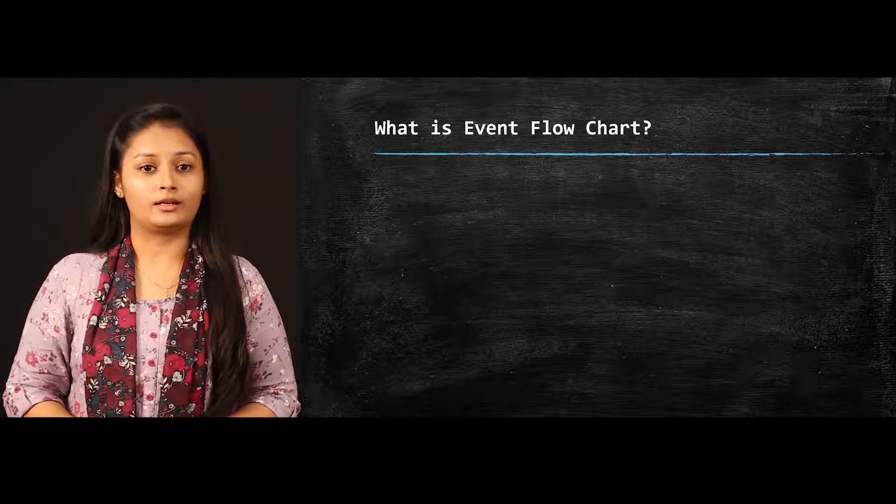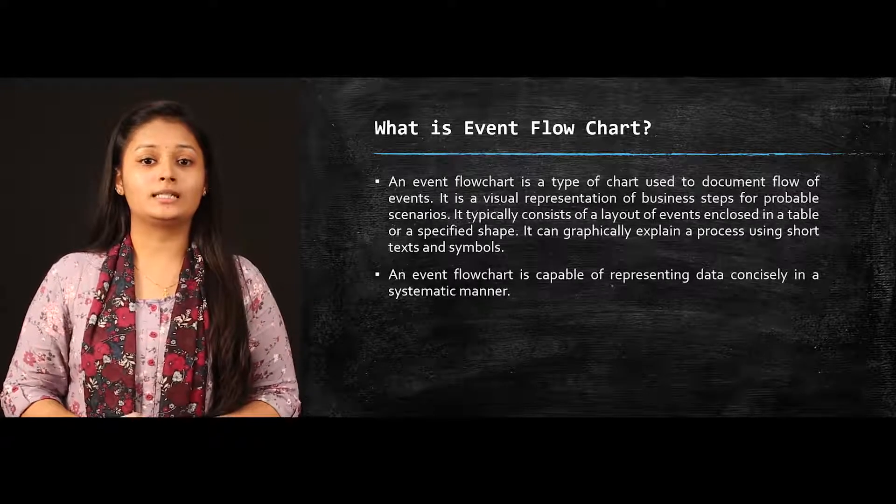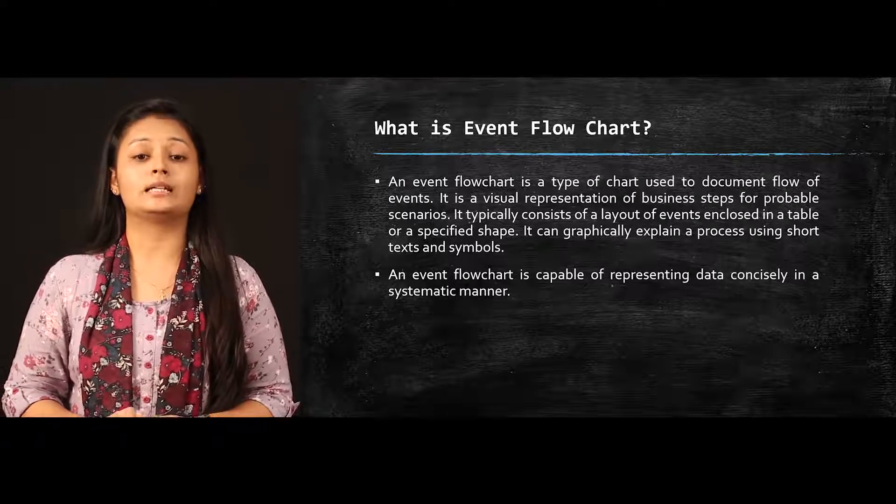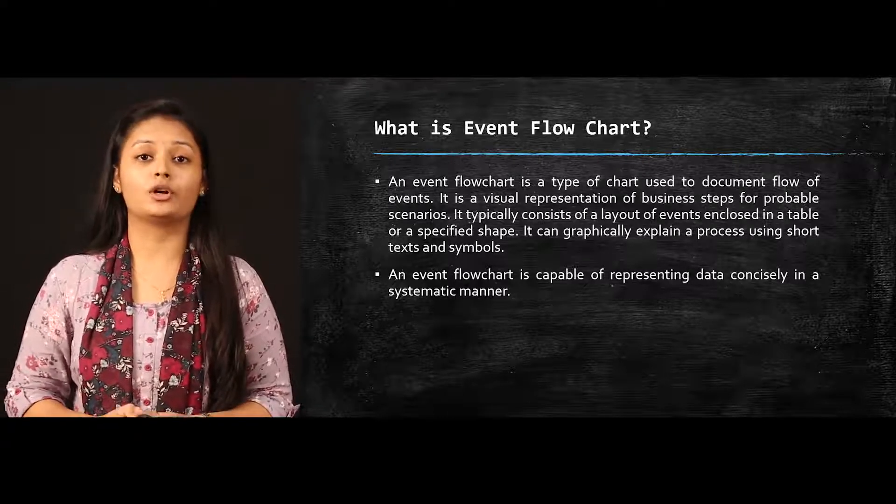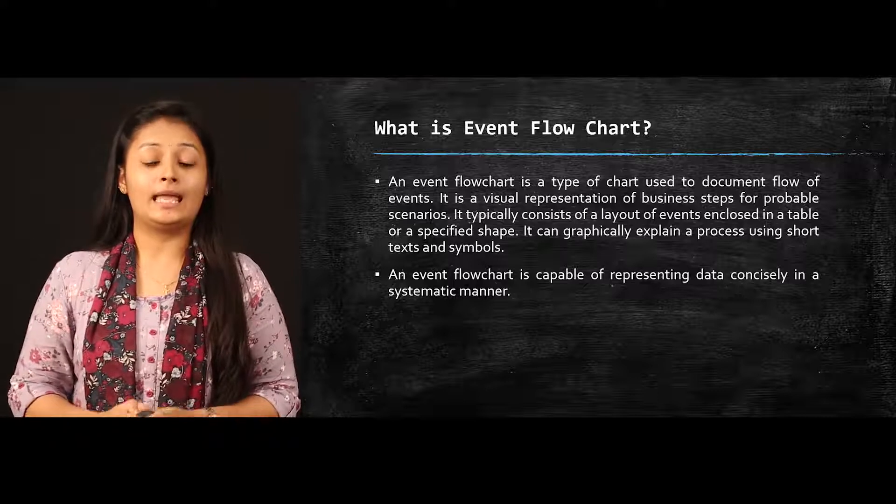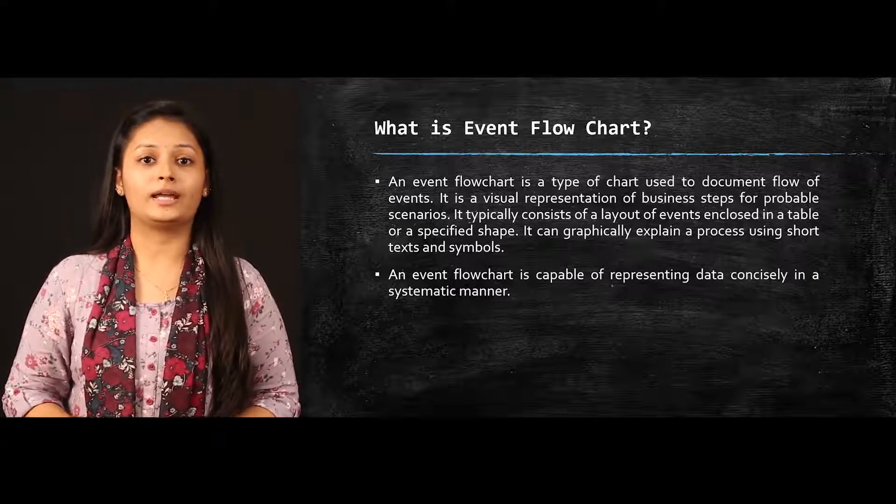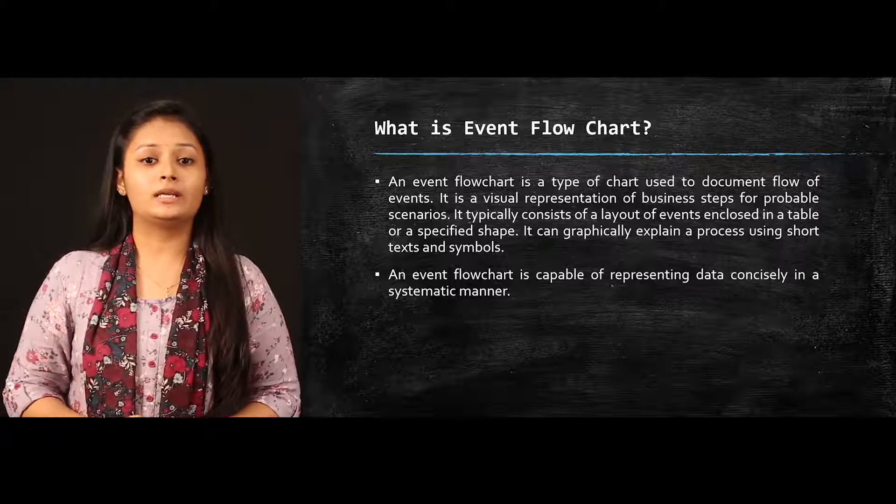Let's begin with the event flowchart. Event flowchart is a type of chart used to document the flow of events. It is the representation of the steps which you are going to follow in the event. It consists of the layout of the events enclosed in a table or a specified shape.